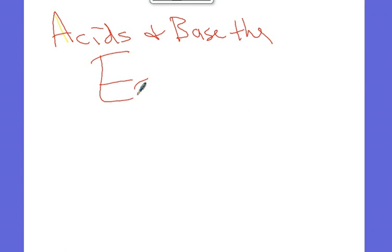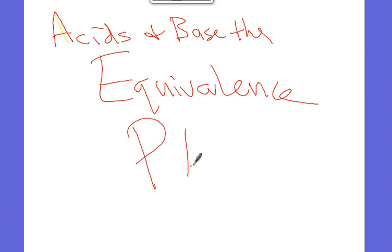Acids and bases. The equivalence point. What is that last letter? It's clearly equivalence, C-E. Looks like the Estonian O. Alright, acids and bases, the equivalence point.